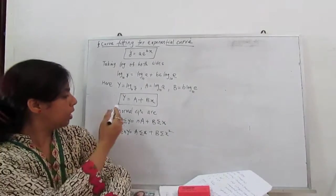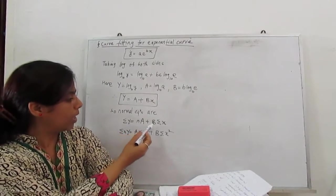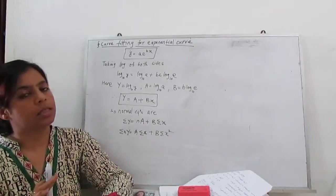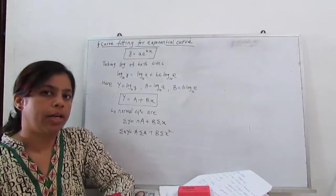So for this normal equation is summation capital Y equals nA plus B summation x, summation xY equals this. This is the same as equation of straight line.